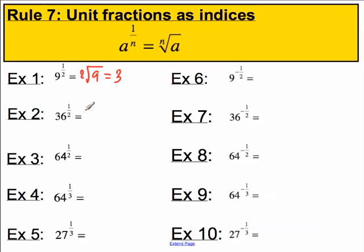Thirty-six to the one over two is the second root of 36. The square root of 36, that is, which is simply six, because six times six is 36.